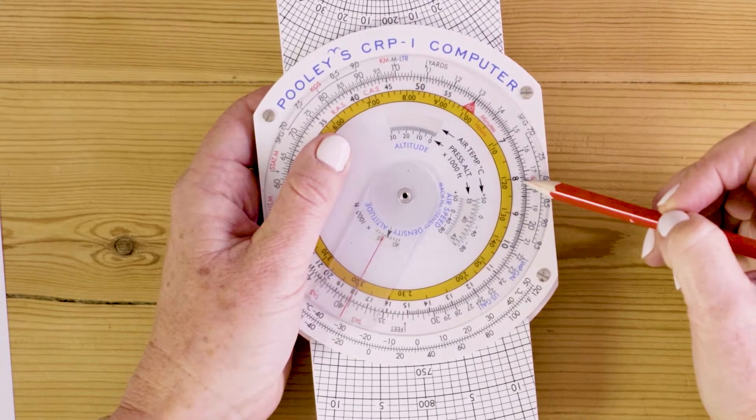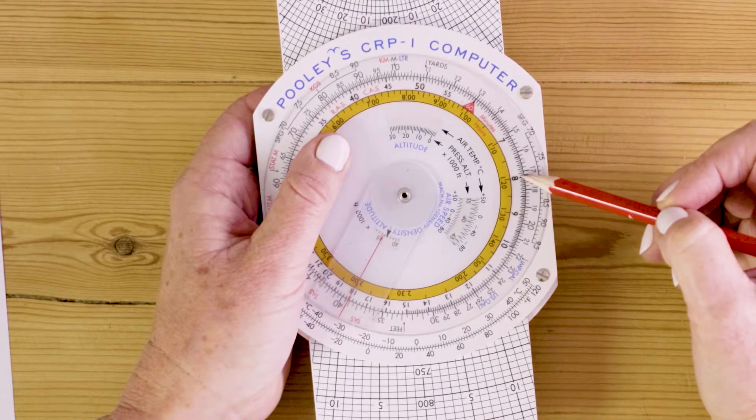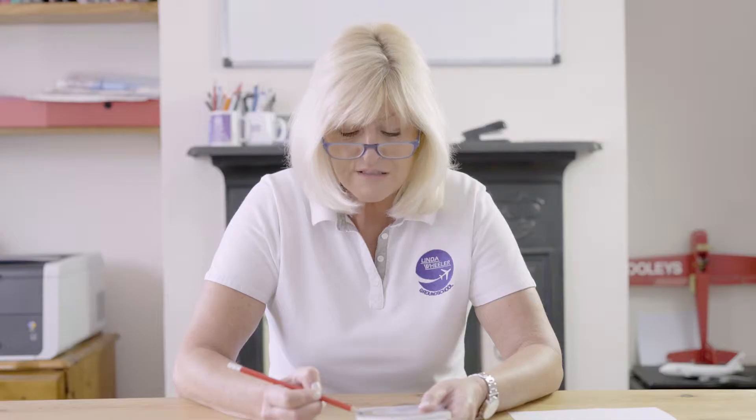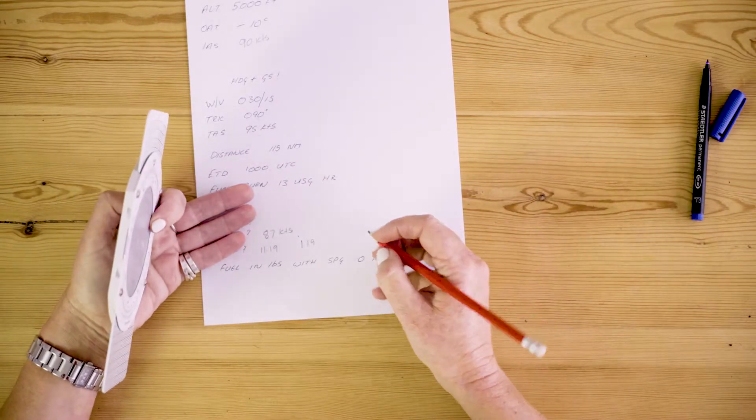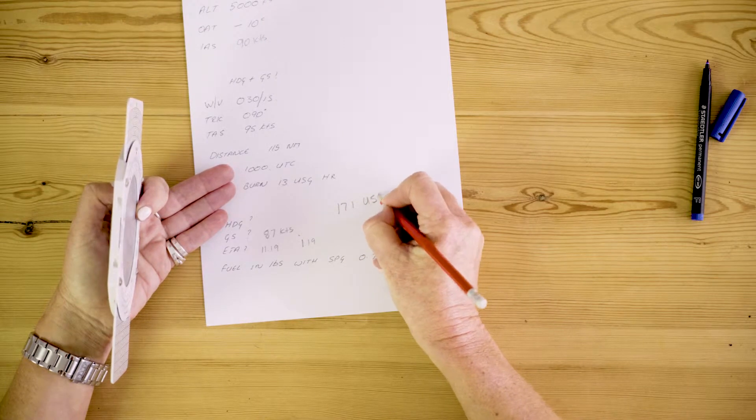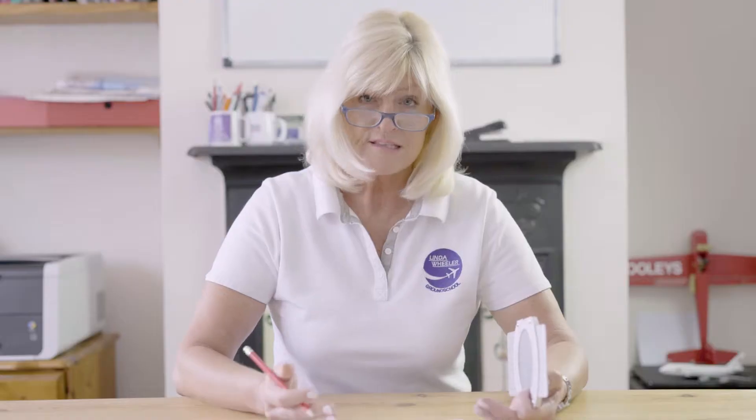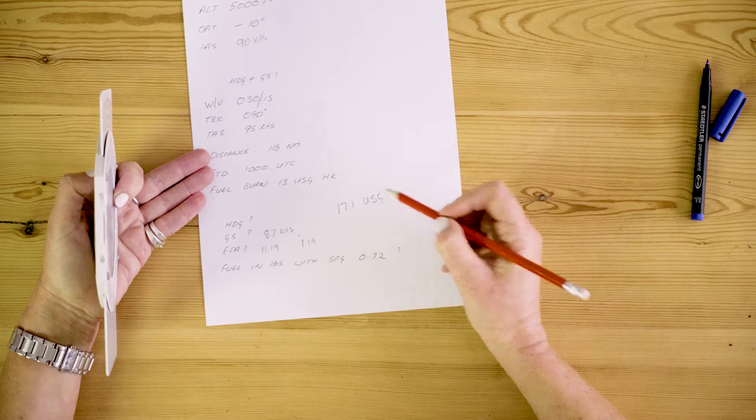79 minutes. There we go. I'm going to burn 17.1 US gallons. Fantastic! I now know how much fuel I need. I need 17.1 US gallons. This obviously is not including reserves. You put at least half an hour reserve on there. I put an hour reserve on there.